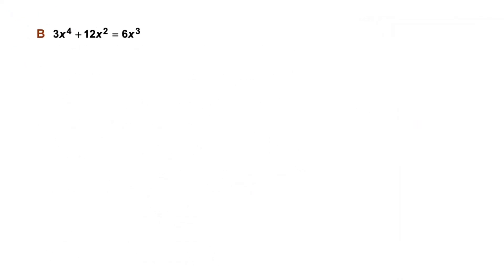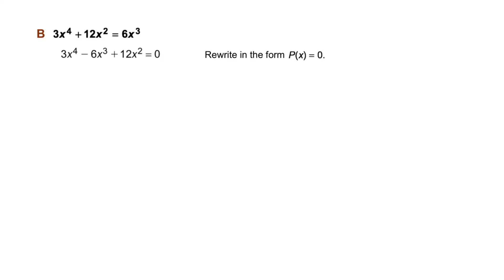Part b: how about the equation 3x to the fourth power plus 12x squared equals 6x cubed? Our first step is to rewrite in the form p of x equals zero, collecting all terms on the left-hand side: 3x to the fourth minus 6x cubed plus 12x squared equals zero.